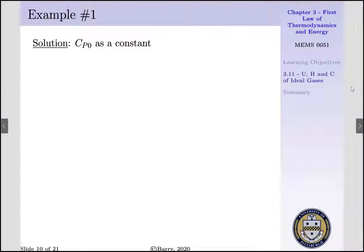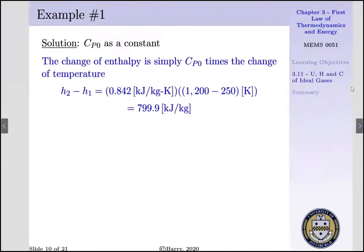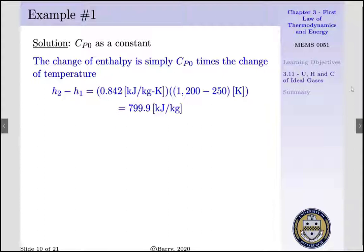Now, for us to begin, let us first treat our constant pressure specific heat taken as a constant value from table A5. Our change of enthalpy is simply our constant pressure specific heat times our change of temperature. That is, H2 less H1 would be equal to CP0, which is taken as 0.842 kJ per kg-K times our change of temperature, 1200 minus 250 Kelvin. H2 less H1 is 799.9 kJ per kg. And we should take this value with some skepticism.